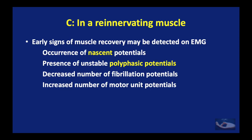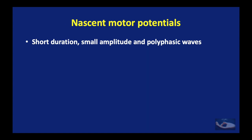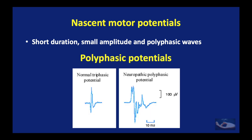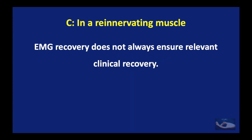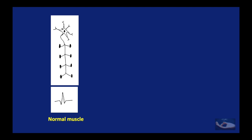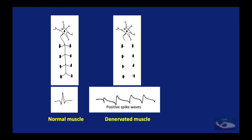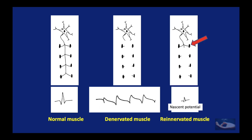When the muscle starts getting re-innervated, early signs of recovery can be detected on EMG. The first signs are the occurrence of nascent potentials and the presence of unstable polyphasic potentials, along with a decreased number of fibrillation potentials and increased number of motor unit potentials. Nascent potentials are short duration, small amplitude, and polyphasic waves, while the polyphasic potentials differ from the normal triphasic potentials recorded in a normal muscle. We need to keep in mind that EMG recovery does not always ensure relevant clinical recovery.